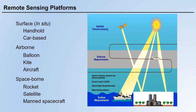On the right side, we have a figure to illustrate different platforms. We could carry sensors on a ship, on a car, or a handheld device. Airborne aircraft can also be used to carry sensors, and in space, we can use satellites to carry sensors.